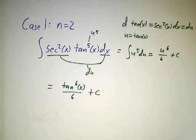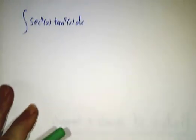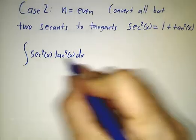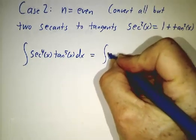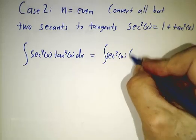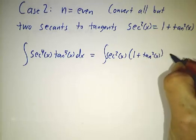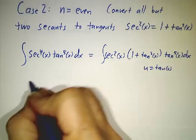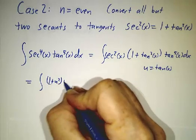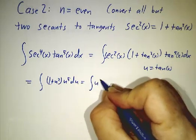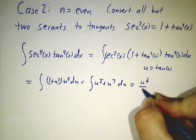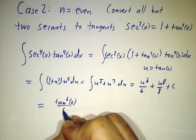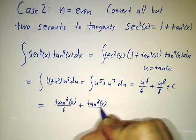The next case is when n isn't 2 but is even. We can convert secants to tangents using secant squared equals 1 plus tangent squared. For example, the integral of secant to the fourth times tangent to the fifth dx: keep two secants to go with the dx, rewrite the other two secants in terms of tangents, then multiply by tangent to the fifth. With u equals tangent of x, this becomes the integral of 1 plus u squared times u to the fifth du, which is u to the fifth plus u to the seventh du — giving tangent to the sixth of x over six plus tangent to the eighth of x over eight plus a constant.